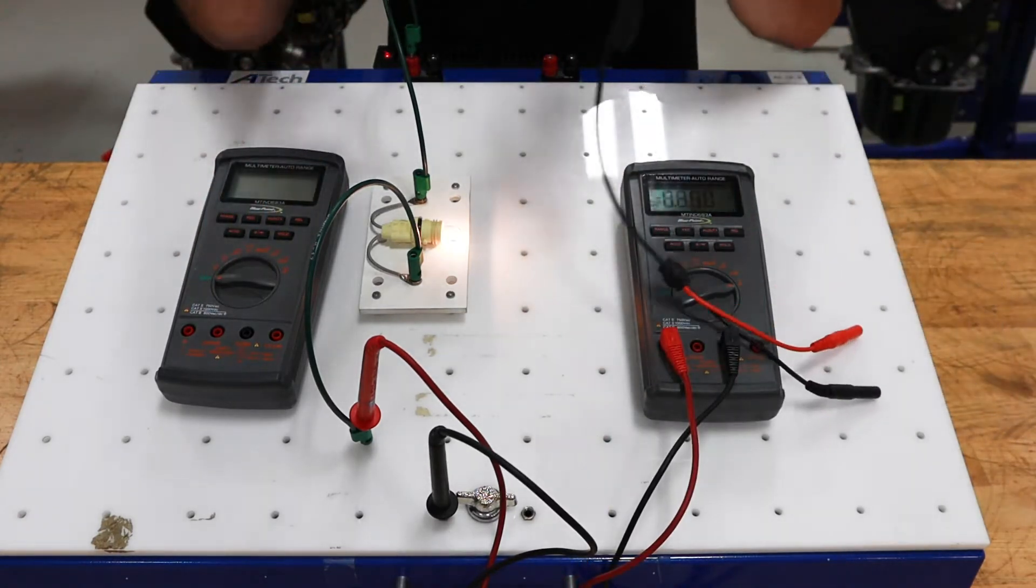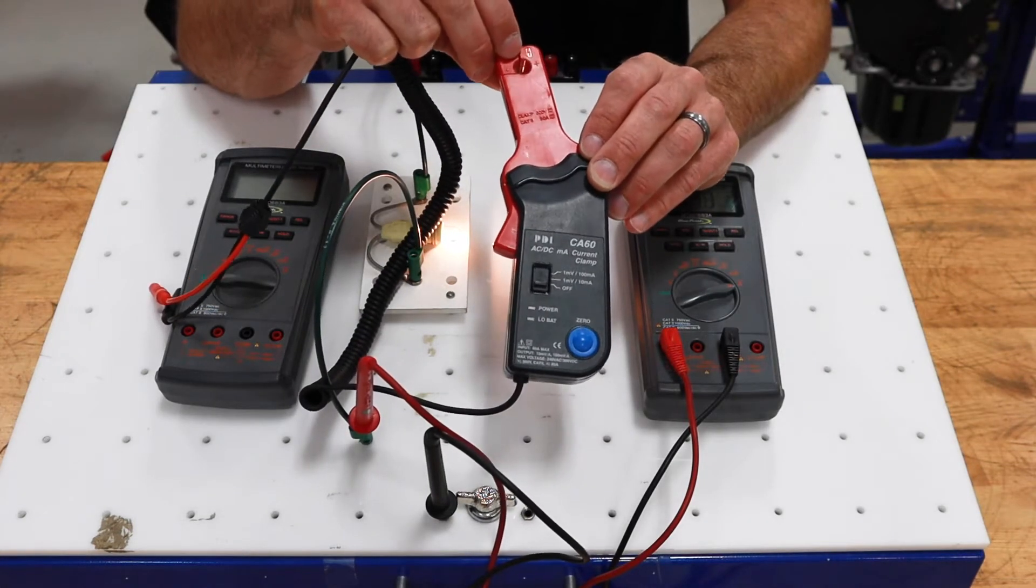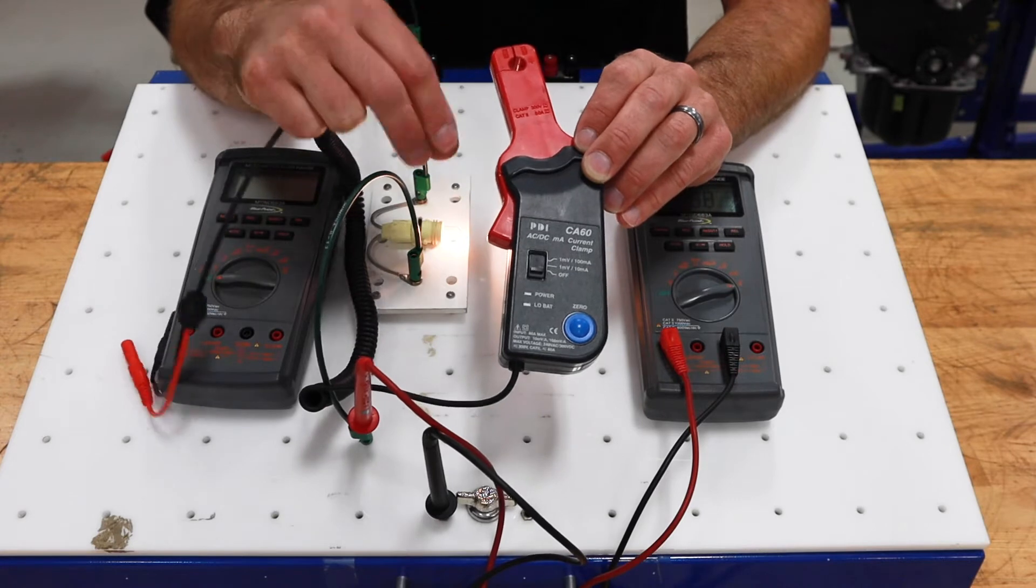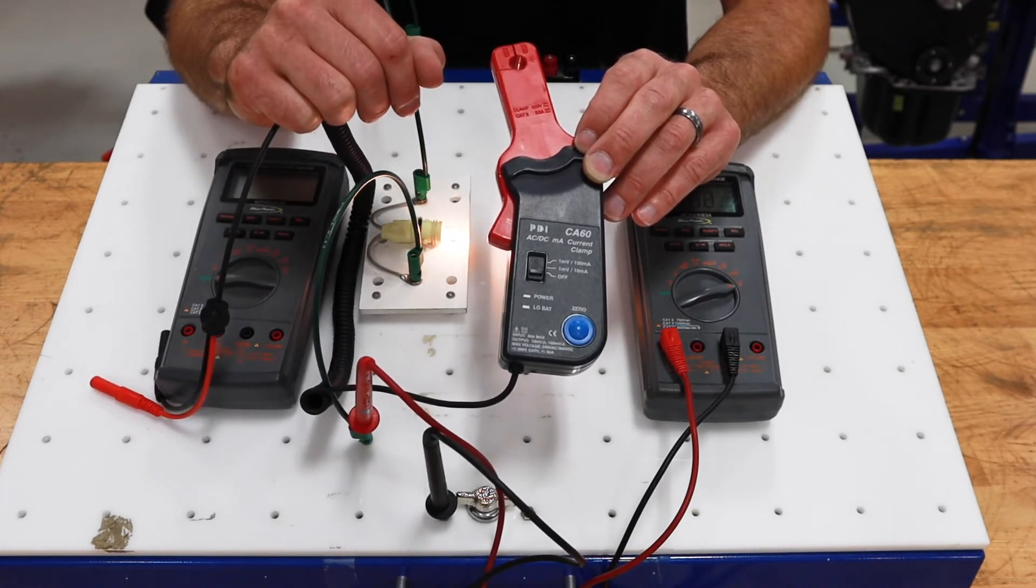The other popular method is to use what's called an amp clamp. This inductive amp clamp looks at the magnetic fields that are generated by current flow through a wire and interprets that to a reading so we can see how much current has gone through that circuit.